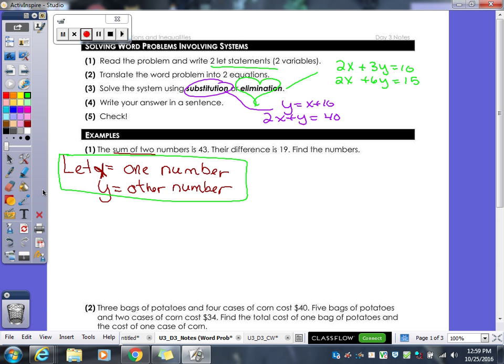Now it says the sum of these numbers is 43, that's easy right? Their difference is 19. There's my two equations, x plus y is 43, x minus y equals 19.